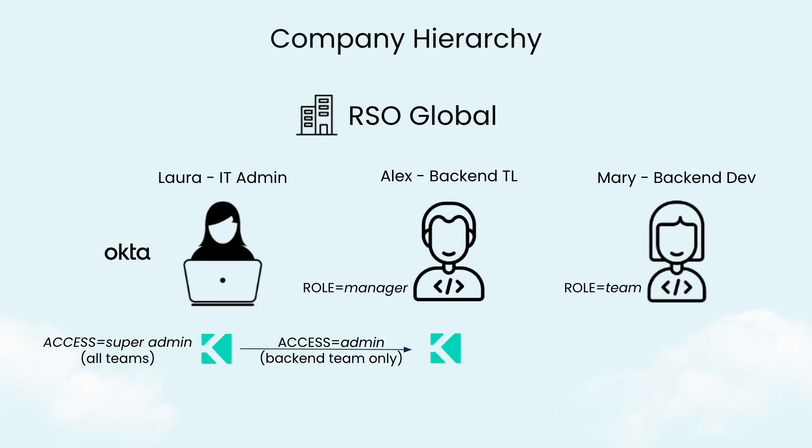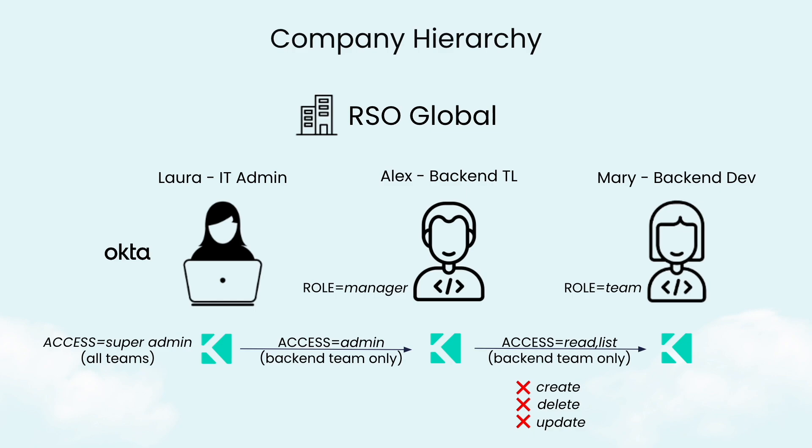Alex will then create another access role for his team that gives specific permissions to each team member, including Mary. For example, the back-end team might be given access to read and list only secrets in order to consume them, but they would not be able to create, delete, or update them. We now have three different levels of permissions with least privilege, and you can see how the hierarchy of access in Akeyless works within an organization.